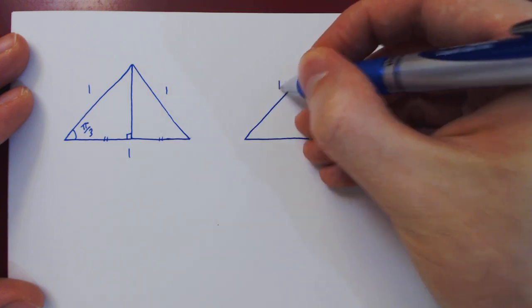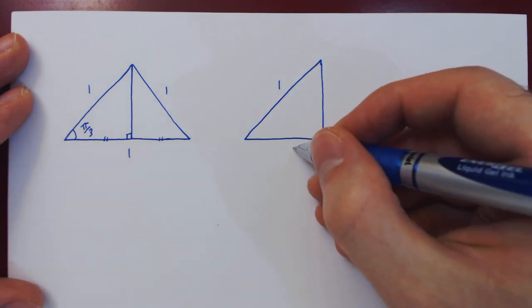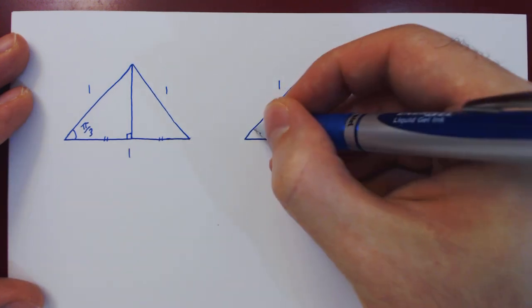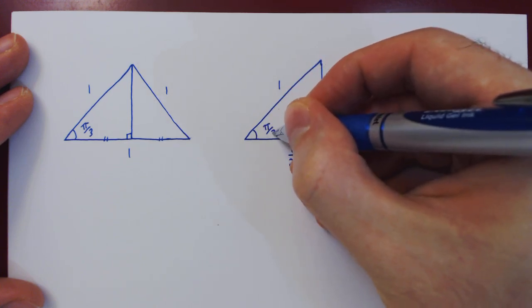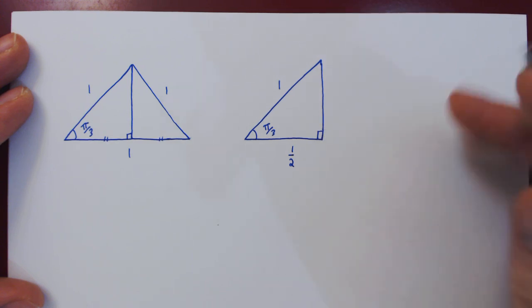So we have a hypotenuse of 1. Since this side is half of 1, it's of course 1/2. The angle here is π/3, and the angle here is π/2.